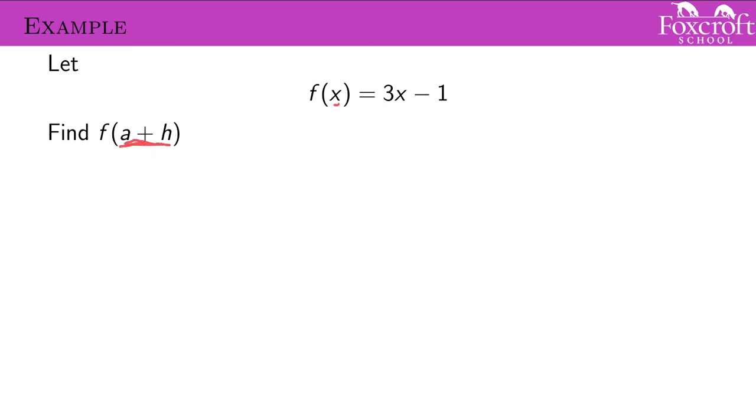So again, if I think about this x as a placeholder, it gets replaced by whatever is in the parentheses. So f(a + h) is going to be 3—instead of x I put in the placeholder a plus h—minus 1. And I mean there's not much you can do here. You can distribute this 3. So remember if you distribute, this 3 multiplies by both of these things, and you're going to get 3a plus 3h minus 1.